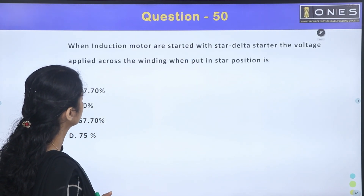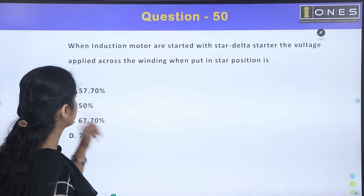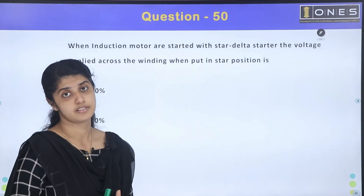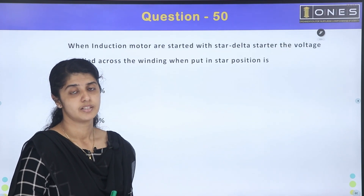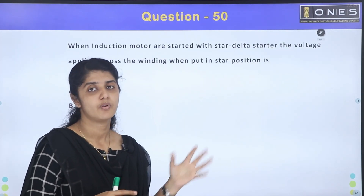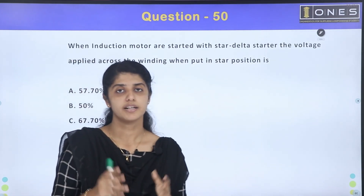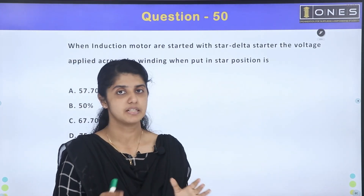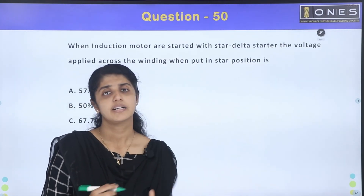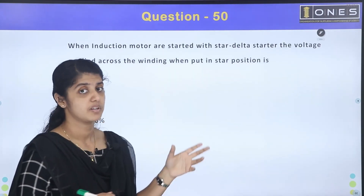When an induction motor is started with a star-delta starter, the voltage applied across the winding in the star position is reduced. In star connection, the phase voltage is VL divided by root 3, which means the winding receives 1 by root 3 times the line voltage.